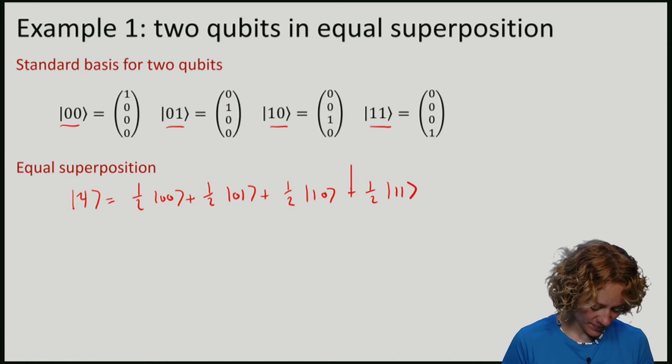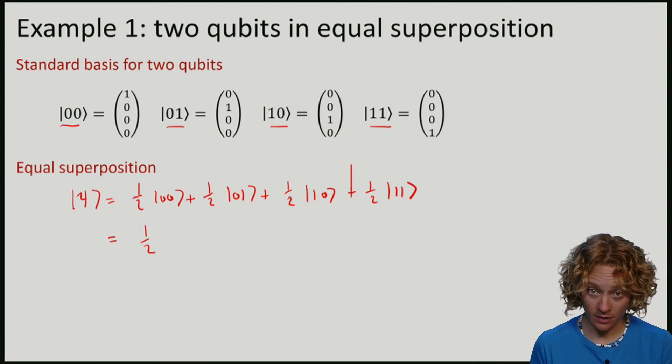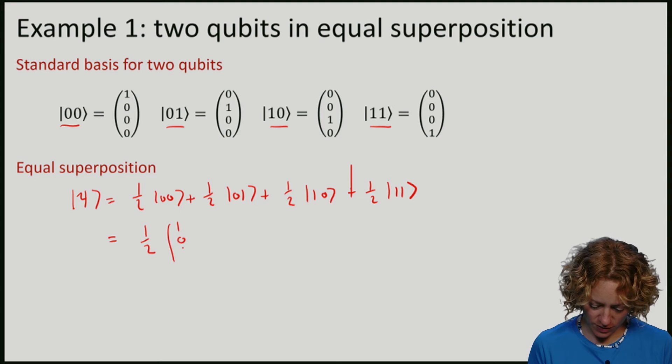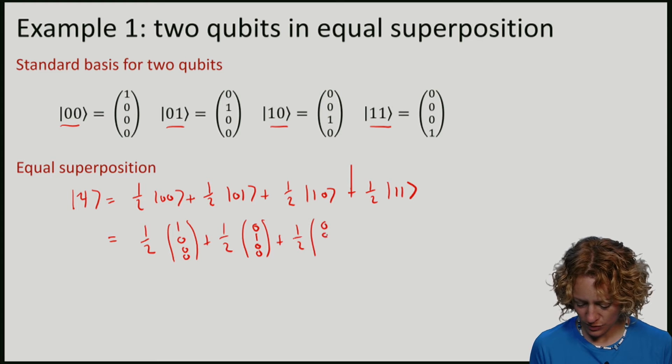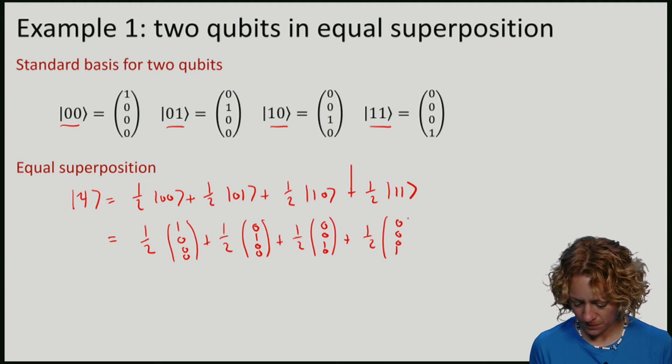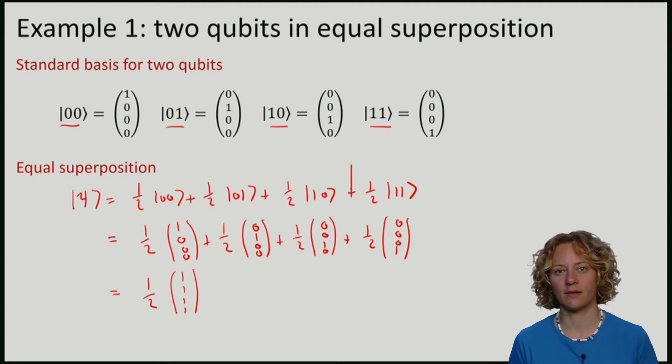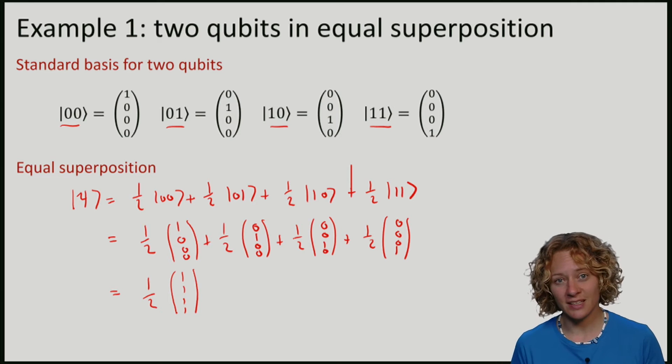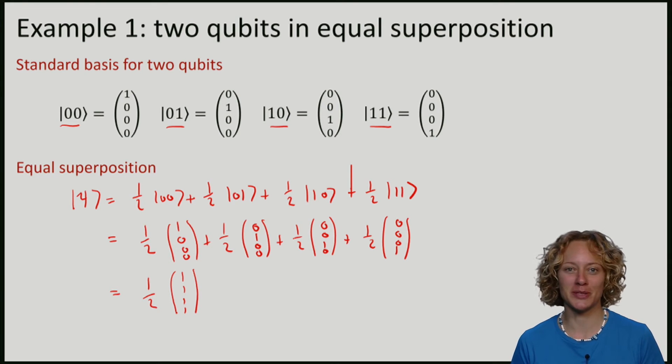To be absolutely clear, if I write this out, I have half times 1,0,0,0, plus half 0,1,0,0, plus half 0,1,0,0, plus half 0,0,0,1. So if I sum them all up, I get half times 1,1,1,1. You should check that if I take the inner product of this vector, the vector has length 1, so this is a valid two-qubit quantum state.